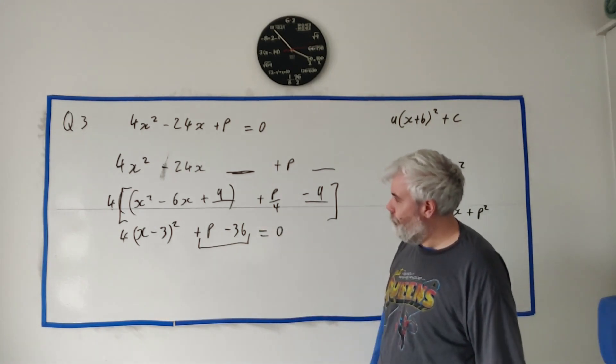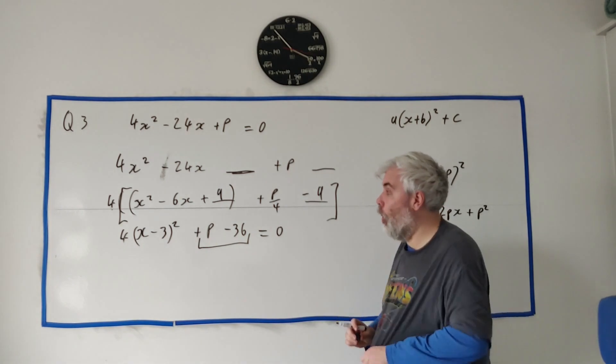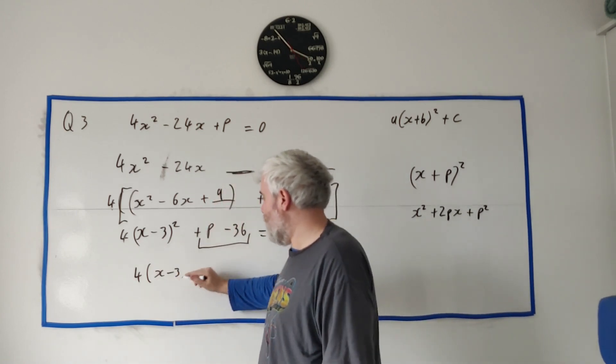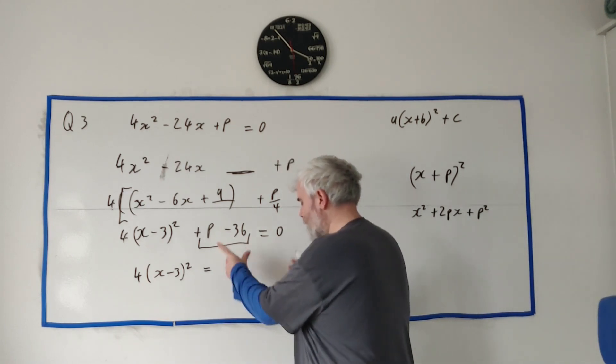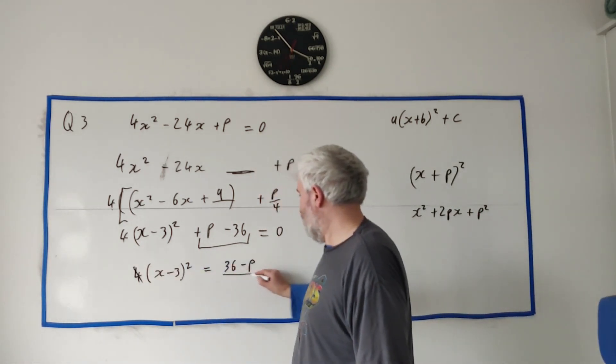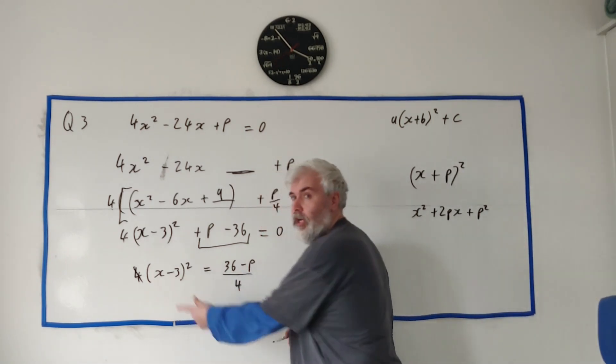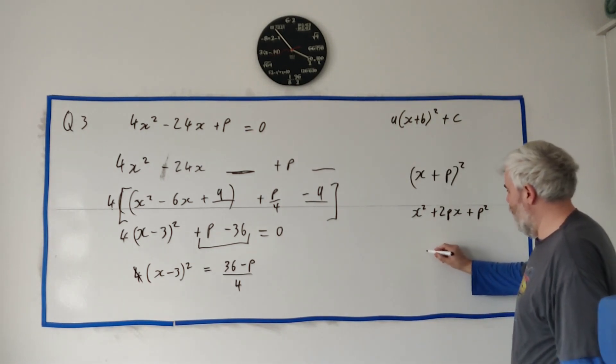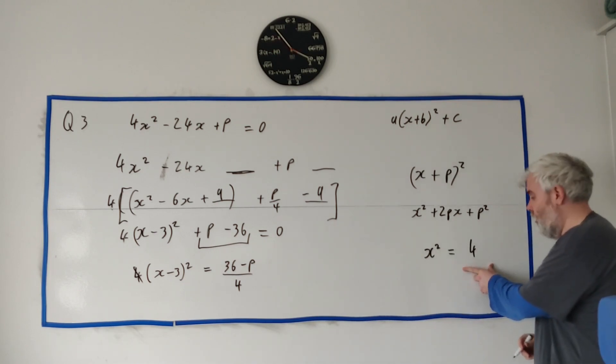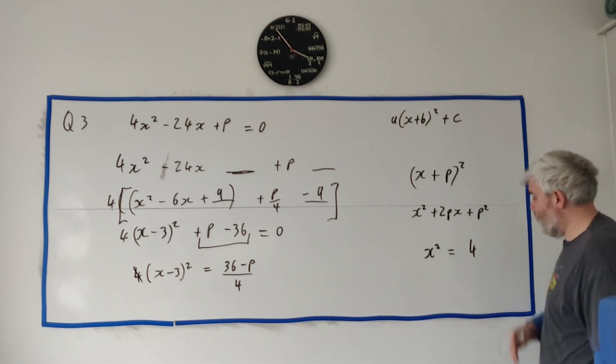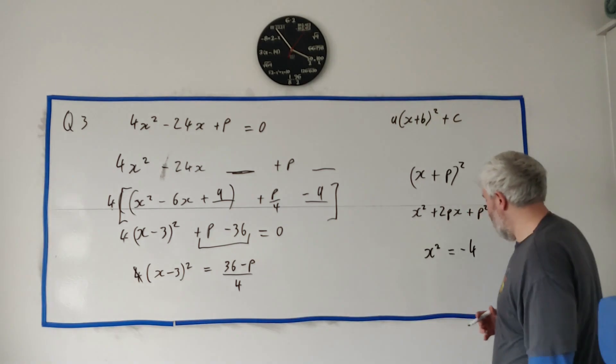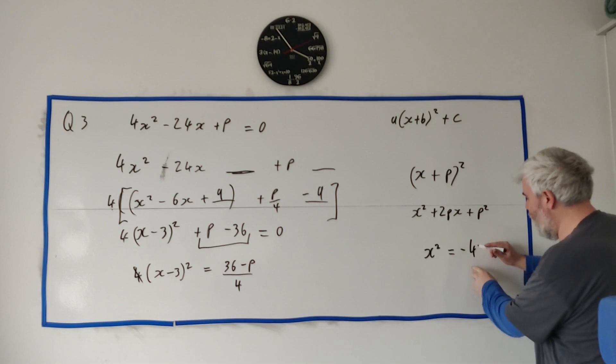And we'll put this guy equal to 0. And what numbers for p makes this have no real roots? Let me start rearranging it here. And hopefully it'll become clear. 4 multiplied by x minus 3 squared is equal to 36 minus p. Let me divide both sides by 4. OK, so we have something squared on the left. Let me do another example over here. I'll do x squared is equal to a number. So if I put 4 here, that has answers. If I put minus 4 here, there's no real answers here.